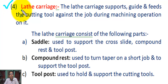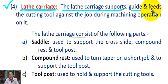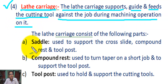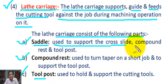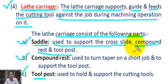Number four: Lathe Carriage. The lathe carriage supports, guides, and feeds the cutting tool against the job during machining operations. The lathe carriage consists of the following parts: A, saddle; B, compound rest; C, tool post. The saddle is used to support the cross slide, compound rest, and tool post.